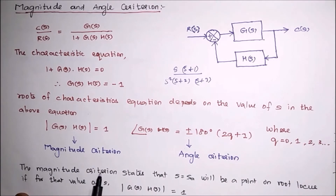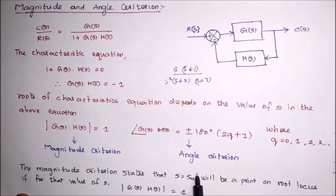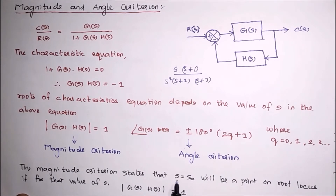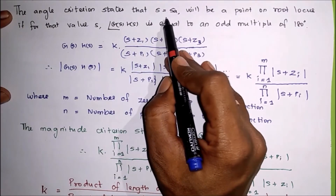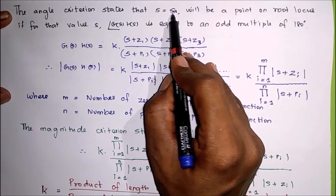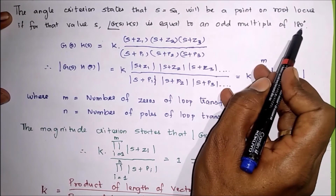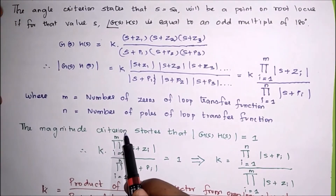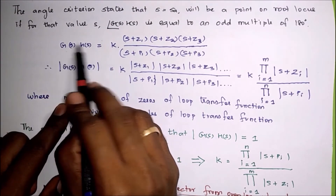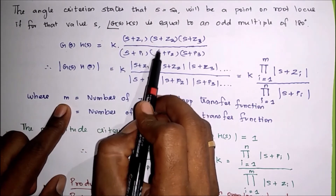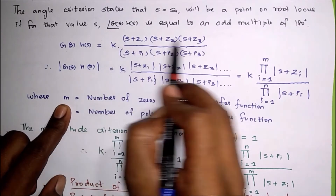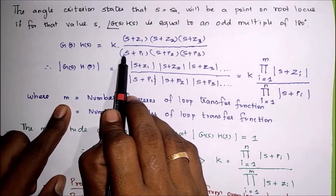For the magnitude criterion, S equal to SA will be a point on the root locus if its value satisfies the condition. Suppose we select a pole with value 2 — if that value satisfies the magnitude equation, that point will lie on the root locus. For the angle criterion also, if we select a pole and it satisfies the condition that angle of G(S)H(S) equals an odd multiple of 180 degrees, that pole will be on the root locus.